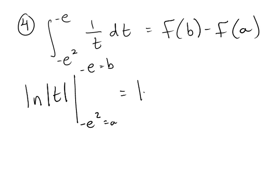So in this case, it's going to be the ln of absolute value of negative e minus the ln of the absolute value of negative e squared.